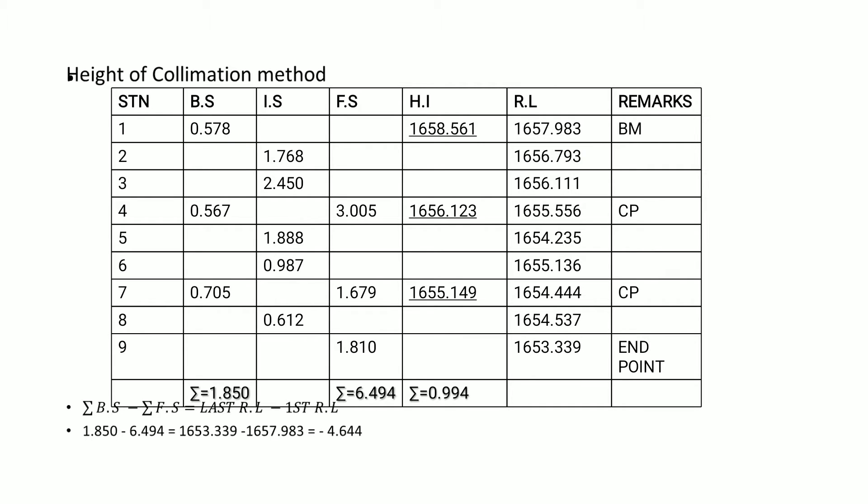Once I add the two values, I get the height of the instrument, or the line of collimation. Adding 1657.983 plus 0.578 gives 1658.561, so that is our height of instrument.